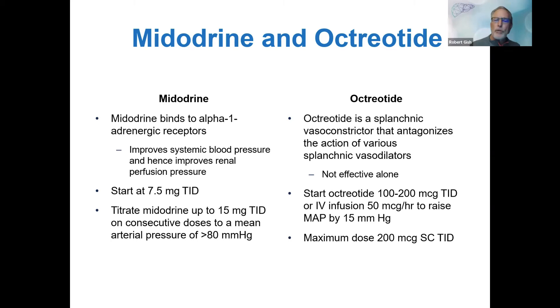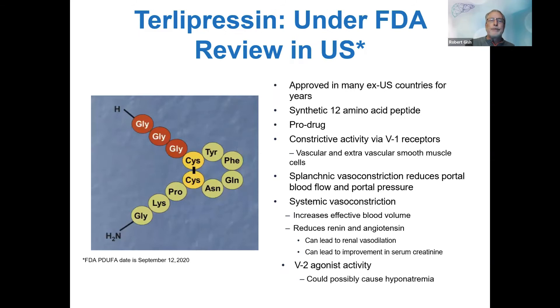Midodrine is an alpha-1 adrenergic receptor agonist, and you can go up to 15mg TID. Some pharmacists prefer TID as opposed to Q8, and it's nice to have a longer period between the third and first dose, allowing some vascular recovery. Octreotide is going to be given subcutaneously in this setting, even though there is data on IV infusion. Octreotide is quite expensive — you could go up to 200 micrograms sub-Q three times a day.